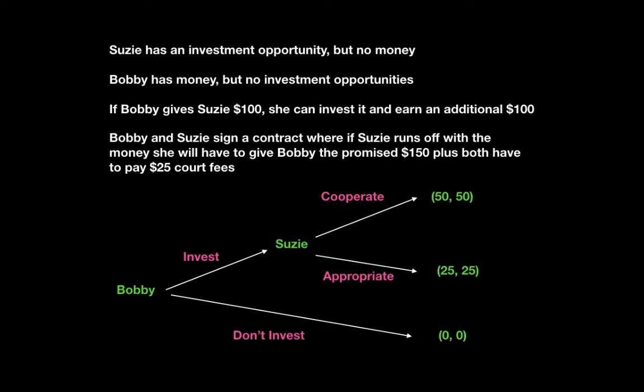If Bobby doesn't invest, they both get zero. Once Bobby gives the money to Susie, she has the choice to cooperate and get $50 or to appropriate and get $25. Now she has the incentive to cooperate and get $50. Bobby's choices are: invest and get $50 (since Susie has incentive to follow through), or don't invest and get zero. Bobby is now better off if he invests.